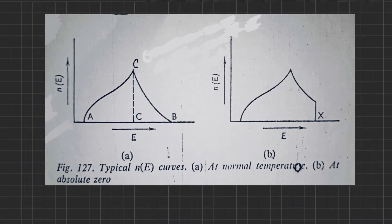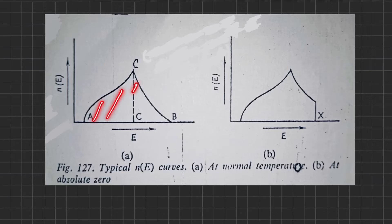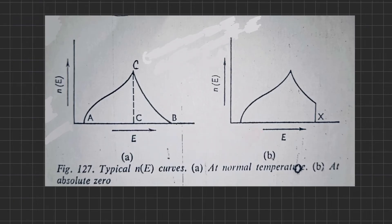The curve at normal temperature shows a typical small N(E) curve for a metal. The energy of the electrons in the band varies from point A to point B, and the energy difference between A and B measures the width of the energy band. This width varies from matter to matter but is of the order of one to ten electron volts. The curve shows that at point C is the most favored energy, and the area under the curve is proportional to the total number of electrons in that particular band.